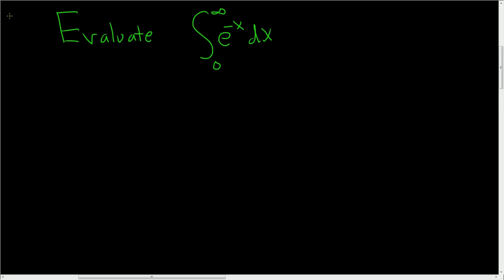So we have what's called an improper integral. The reason it's called an improper integral is because we have infinity here. The upper limit of integration is infinity, and that makes it improper. This is a really easy example, so it's a good first example.